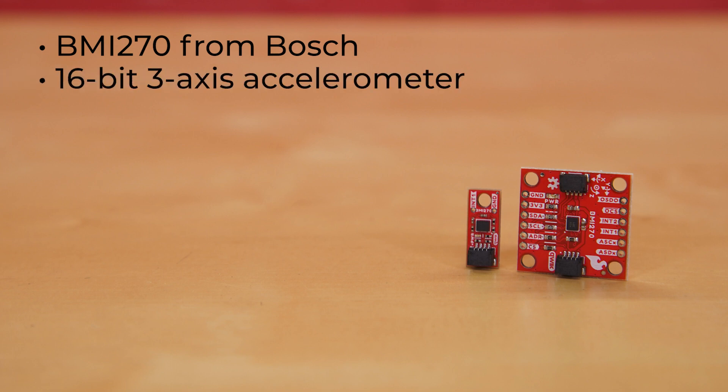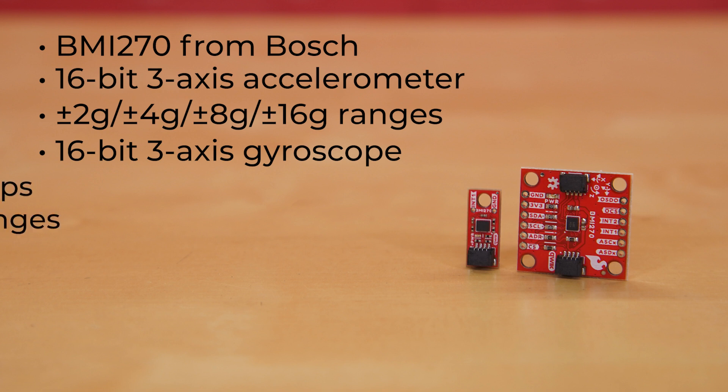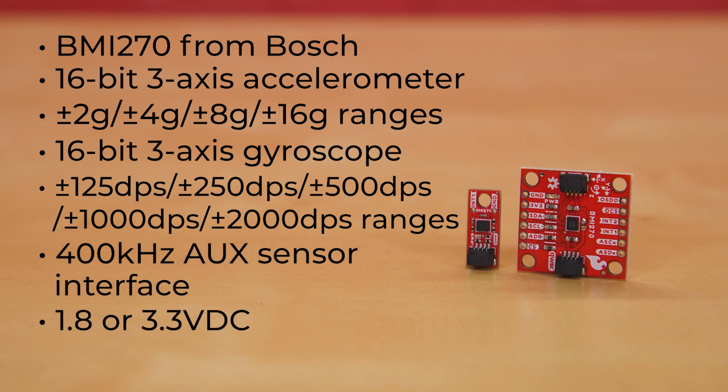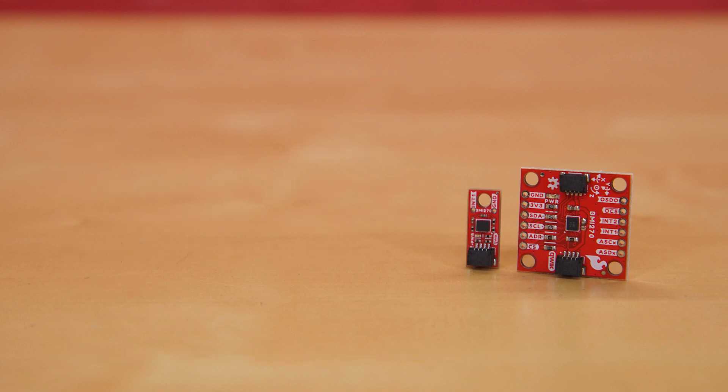It houses a 16-bit 3-axis accelerometer with ±2, 4, 8, and 16G ranges, alongside a 16-bit 3-axis gyroscope with ±125, 250, 500, 1000, and 2000 DPS ranges. There's also a 400 kHz AUX sensor interface with hardware synchronization, with operation at 1.8 or 3.3 volts DC, and ultra-low current consumption of typically about 685 microamps in full ODR and aliasing-free operation.